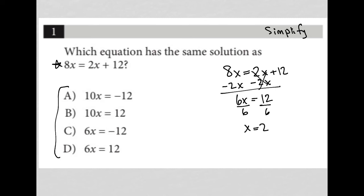So if x were equal to 2 here, that would be 10 times 2, which is 20, not negative 12. So that's gone.